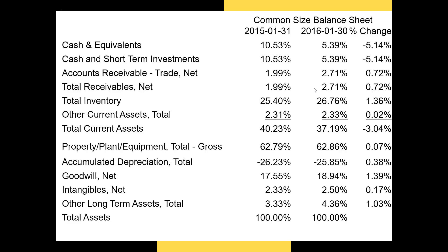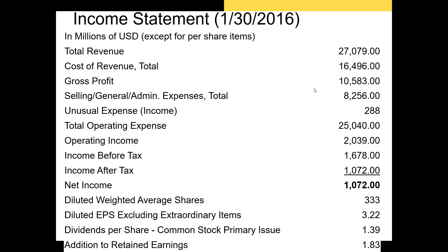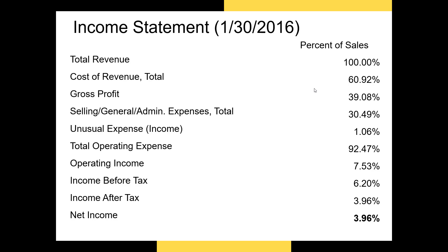The rise in inventory could indicate that Macy's is not selling inventory as quickly as it was in 2015. Looking at Macy's income statement, we can only get a vague sense of how the firm is performing without context from ratios or common-size statements. We know the firm is profitable — it had net income of $1.072 billion in the year leading up to 1-30-2016. Creating a common-size income statement by dividing every line item by total revenue shows that net income is 3.96%, meaning Macy's earned 3.96 cents in profit for every dollar of revenue. We can compare this to competitors like Kohl's or JCPenney.